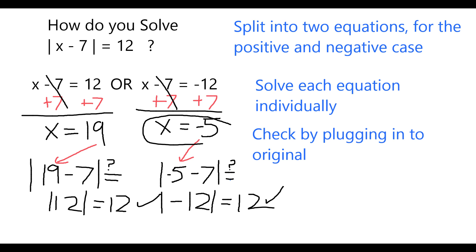Our solutions x equals negative 5 and x equals 19 are two valid solutions to the original absolute value equation, absolute value of x minus 7 equals 12. Hope that helped, thank you.